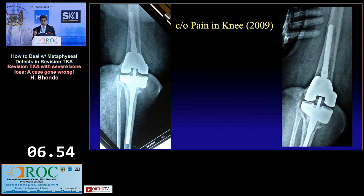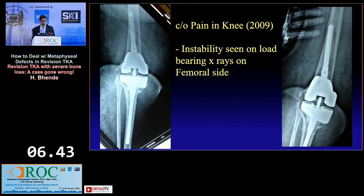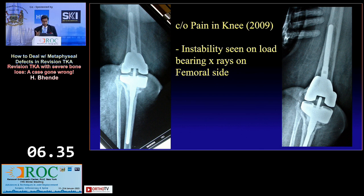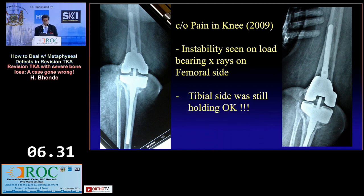Perhaps the metaphyseal part of the femur was not fixed well, or there was further collapse of the metaphyseal bone, and she had significant pain in that area. The femoral side had become loose and painful, while the tibial side, which we thought was questionable, was still holding — it hadn't collapsed in that period.